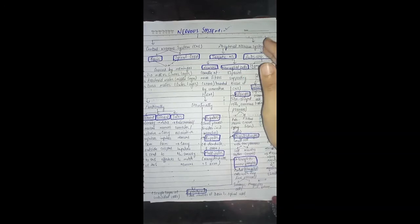Structurally, neurons are classified into three types. Bipolar neurons have two processes — one dendrite and one axon. Multipolar neurons have many dendrites and one axon.